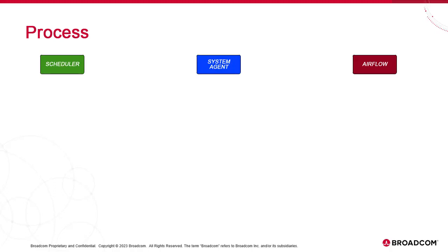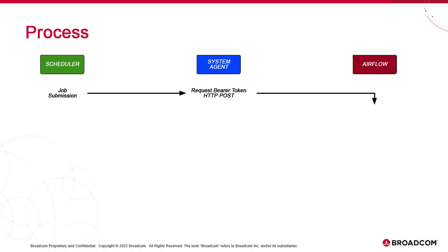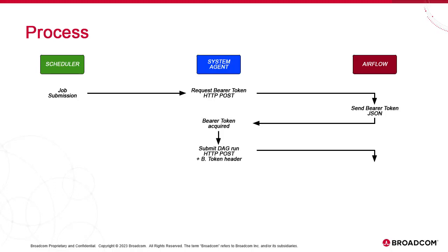Let's look at the sequence of execution. We start with the three main components: Autosys, the system agent, and the target Airflow system. The POJO job is submitted to the system agent by Autosys. The agent acknowledges receipt and posts a bearer token request using the user and password stored in the job's J2EE properties. Airflow sends the bearer token in JSON format. The agent then submits the DAG run with the token as a POST request. Airflow identifies the matching DAG and executes it. Supervision starts concurrently in Airflow and Autosys. The DAG run is given a run ID labeled Autosys, or any other value set in the properties, to which the date and timestamps are appended.